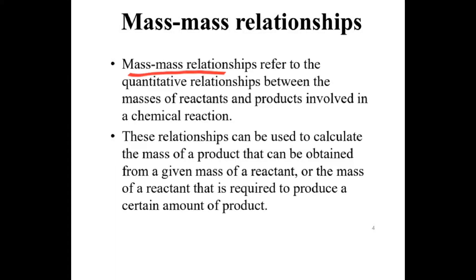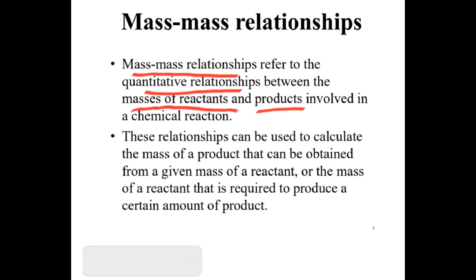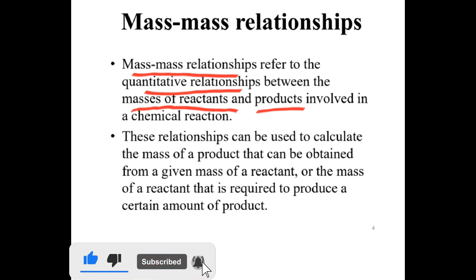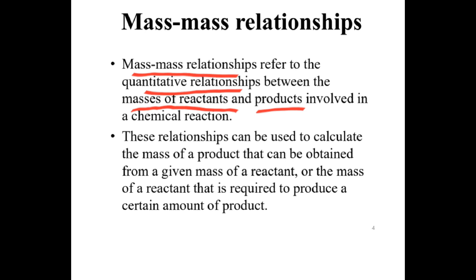Mass-mass relationships refer to the quantitative relationship between the mass of the reactants and products involved in a chemical reaction. These relationships can be used to calculate the mass of a product that can be obtained from a given mass of a reactant, or the mass of a reactant that is required to produce a certain amount of product.